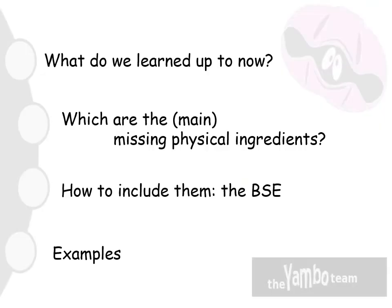The outline of my talk is the following. First, I will do a brief reminder of what we have learned up to now. Then I want to discuss which are the main missing physical ingredients and how it is possible to include them through the solution of the so-called Bethe-Salpeter equation. And finally, I will try to give you a few examples to show why and when these effects are important.